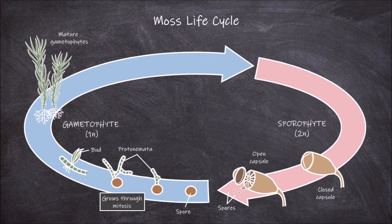The mature gametophyte has a stem-like structure with leaf-like structures coming off of it, as well as rhizoids that work as a root-like system. The gametophyte generation is the dominant generation of mosses. This stage is what we recognize and call a moss plant, and is the generation where photosynthesis is taking place.